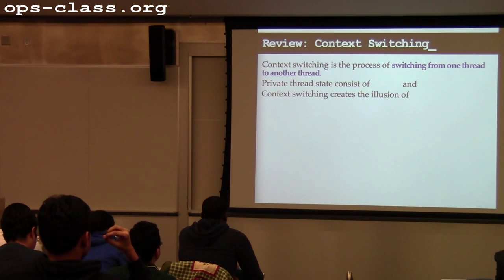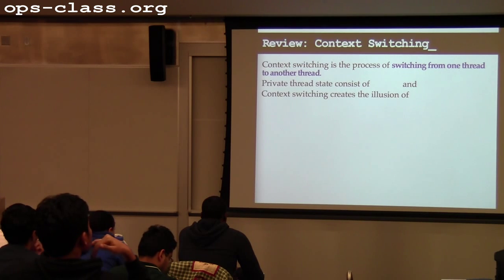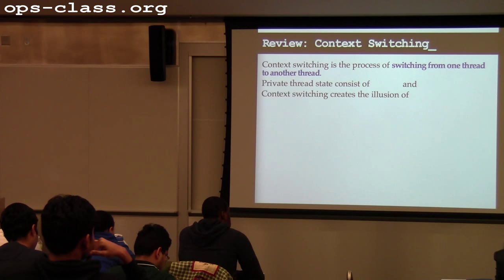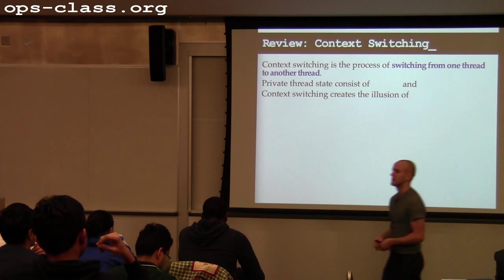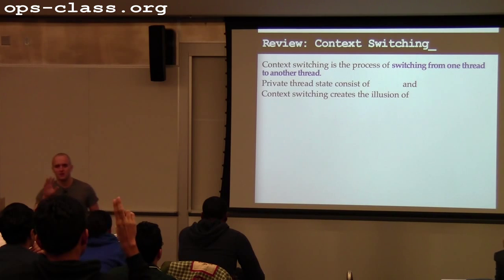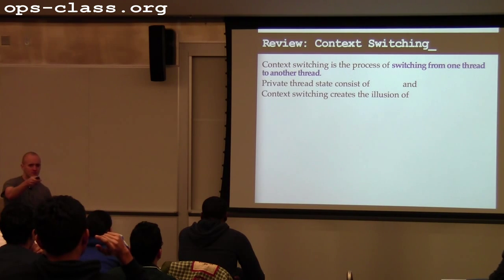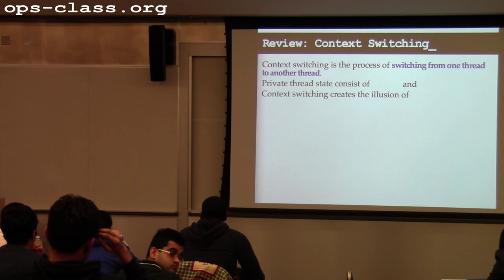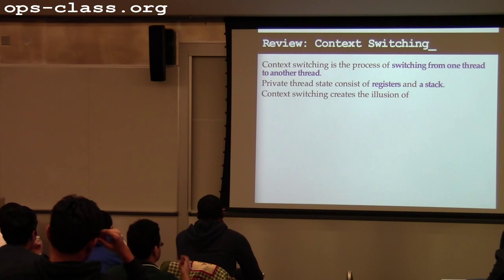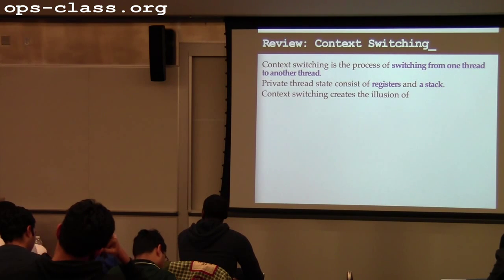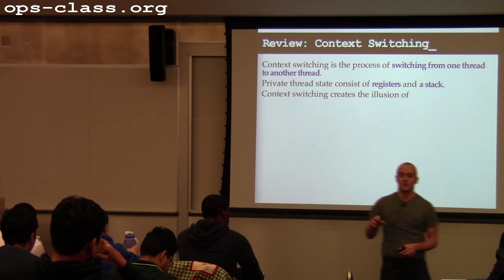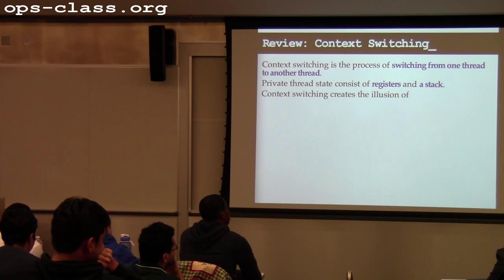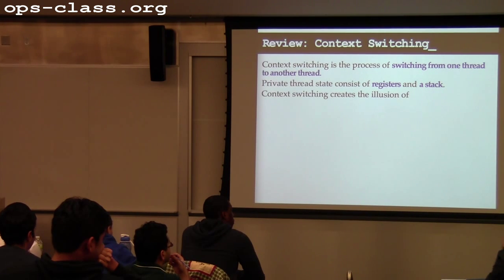So the private thread state that we need to swap out consists of registers — what the CPU looked like when the thread was using it — and the stack. The stack is an area of memory considered to be private per thread, although the operating system doesn't actually enforce that. Threads can write into each other's stacks in user space, but that typically doesn't work out well unless you're very clever about it.